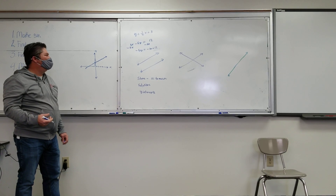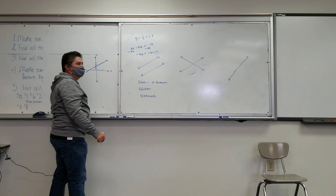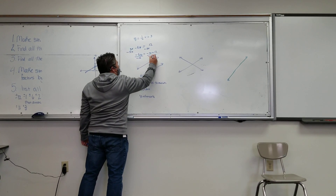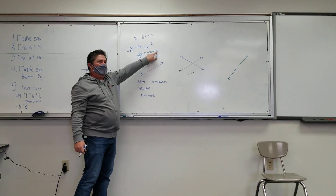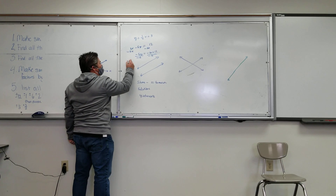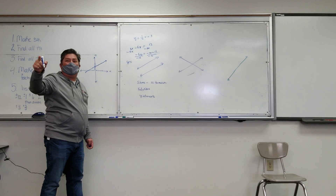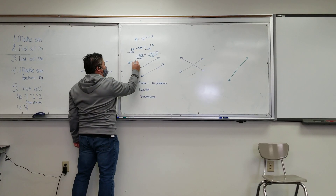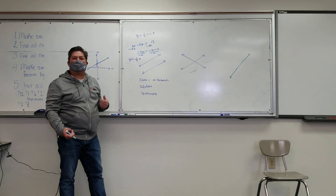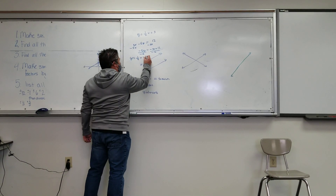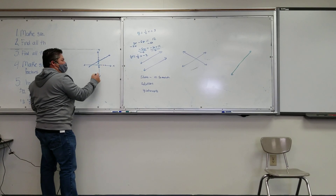Now what should I divide both sides by? Negative six. Here's the key — this is where kids mess up. They'll divide the first part but forget to divide the 12, or they won't get the signs right. So divide everything by negative six: negative three divided by negative six is positive three-sixths, which reduces to one-half. Then 12 divided by negative six is negative two.